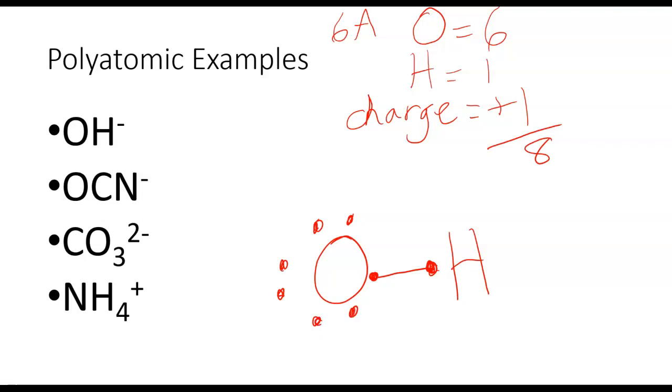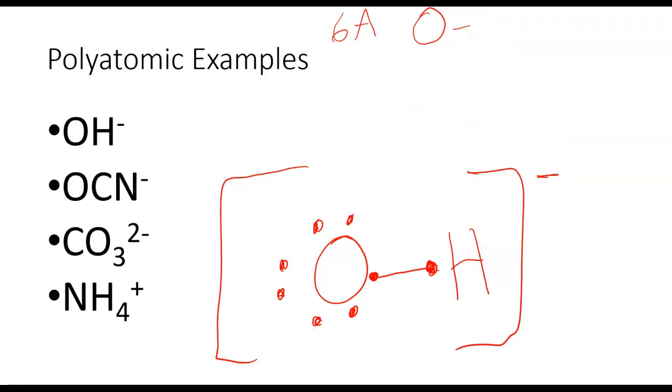Our final structure here has one, two, three, four, five, six, seven, eight. This is the correct structure. The one thing that we do to make it clear that this is an ion and not a molecule is we put brackets around the whole thing. And we put the charge outside. So this would be the final Lewis structure for hydroxide.